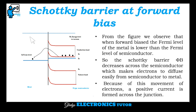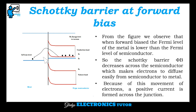This is the energy band diagram during forward bias. When forward biased, the Fermi level of the metal is lower than the Fermi level of the semiconductor. The Schottky barrier φ_b decreases across the semiconductor; the depletion layer is formed but it is very small in size, making it easy for the electrons to diffuse from the semiconductor to the metal.